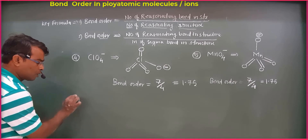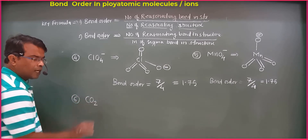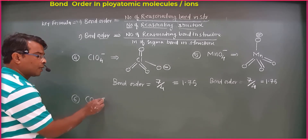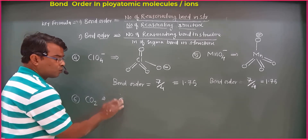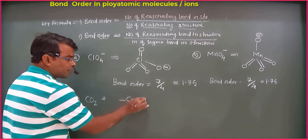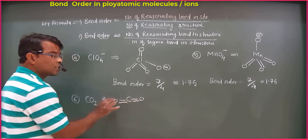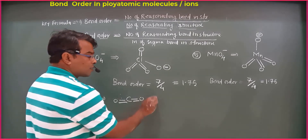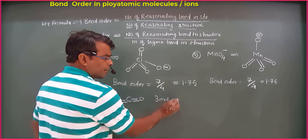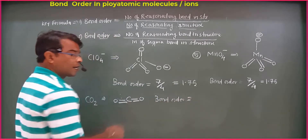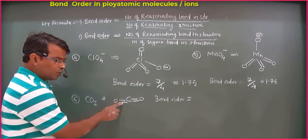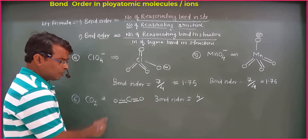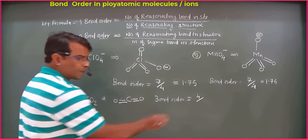Next, we calculate the bond order of CO2 molecules. How do we calculate the structure of CO2? Carbon has 2 oxygen atoms. We calculate the bond order by finding the number of resonating bonds in the structure. The number of resonating bonds is 1, 2, 3, 4. There are 4 resonating bonds. The number of oxygen atoms in CO2 is 2.